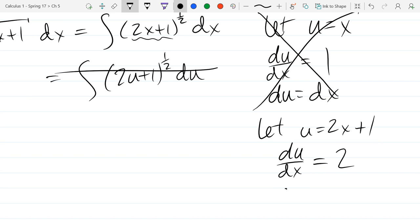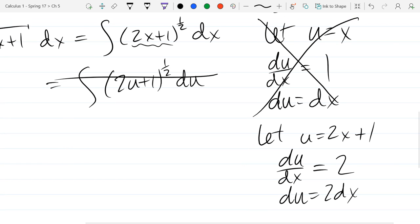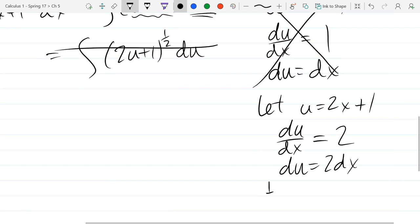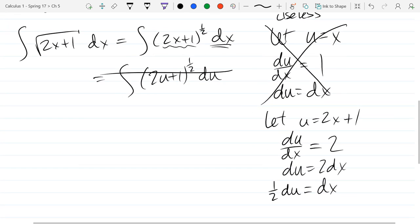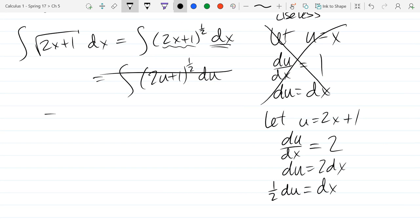So what is du/dx? Just 2, and then du equals 2 dx. Now I don't see a 2 dx, all I see is a dx, so I need to solve for just dx by itself. Divide by 2, so a half du equals dx. When we take out dx we're going to get a half du, and of course all that 2x plus 1 turns into just a u to the half power times a half du.